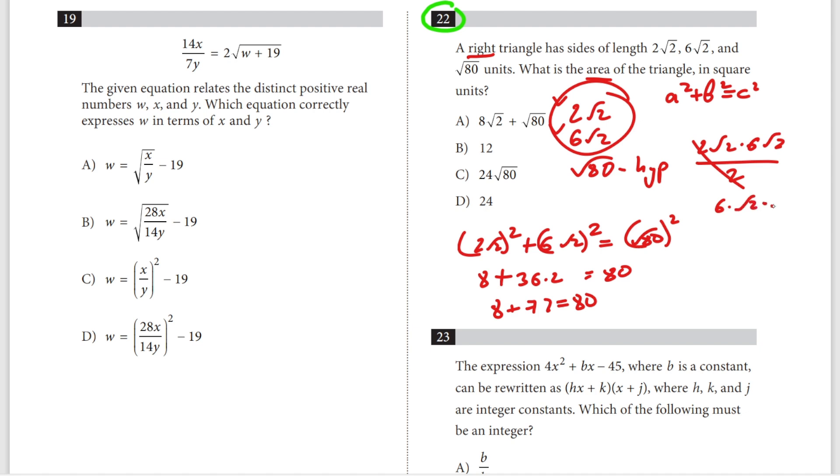We have 6 times √2 times √2, which equals 6 times 2, which equals 12. The answer is B. That's it.